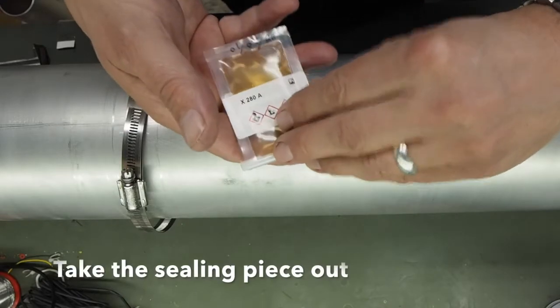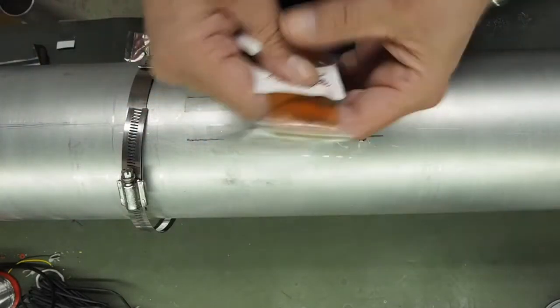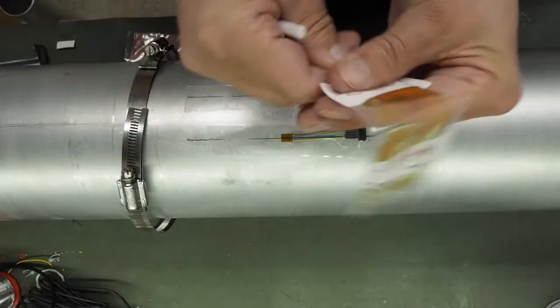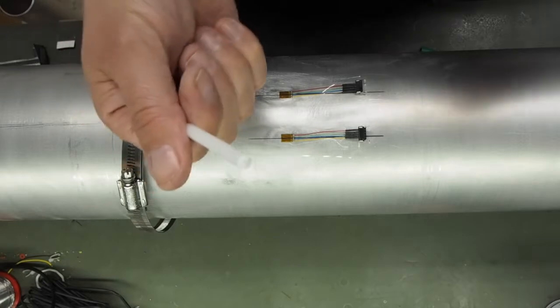Take the sealing piece out with the X280. Retain the white piece from the middle that can be used as a ready glue spreader when we're ready to put the glue on.